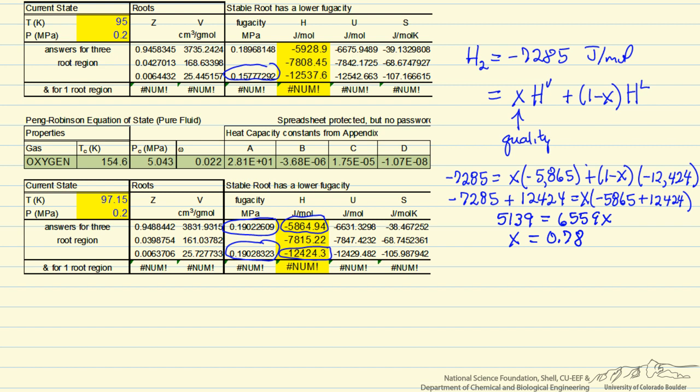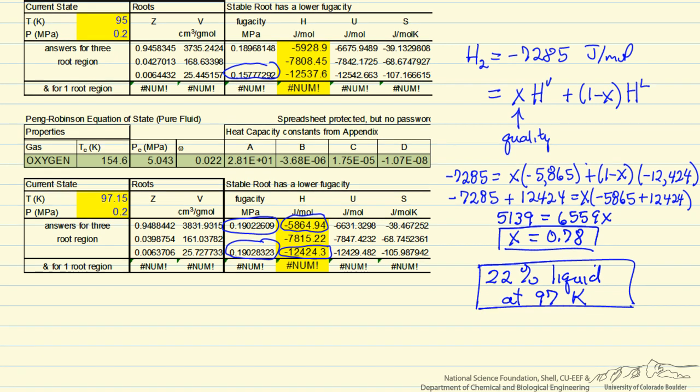So I've made the substitution and done the math, and calculate that the quality is 0.78, which means 78% is vapor and 22% is liquid. So we expand oxygen from high pressure at higher temperature through a Joule-Thompson expansion, we convert some fraction, in this case 22%, to liquid.